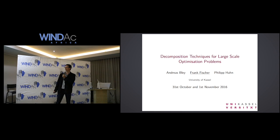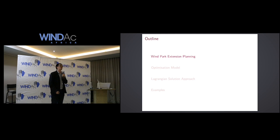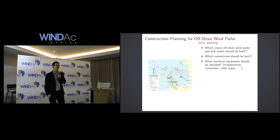Let's start with the windpark extension planning problem. What you see here is part of the northern sea — here is Germany, and here is Denmark. The task is to construct new windparks in the northern sea, along with the energy connections from those windparks to the onshore grid nodes. In its simplest form, you have to decide which windparks to build and which connections to build, so that certain constraints are satisfied and the overall construction is as cheap as possible.